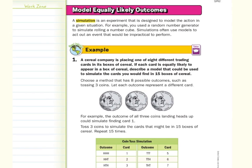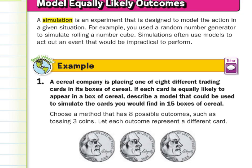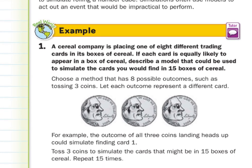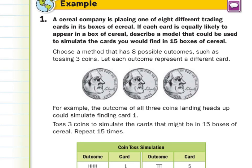Model equally likely outcomes. A simulation is an experiment to model the action in a given situation. Simulations often use models to act out an event that would be impractical to perform. Our first guided example: A cereal company is placing one of eight different trading cards in its boxes of cereal. If each card is equally likely to appear in a box of cereal, describe a model that could be used to simulate the cards you would find in 15 boxes of cereal.